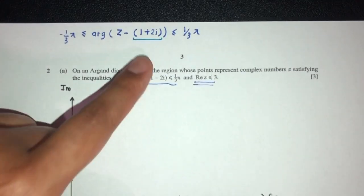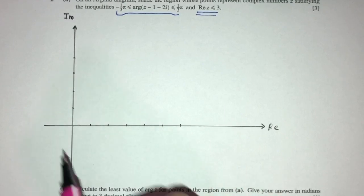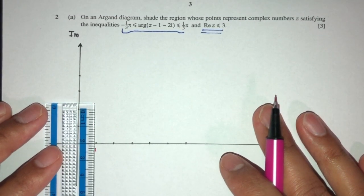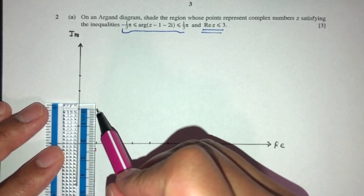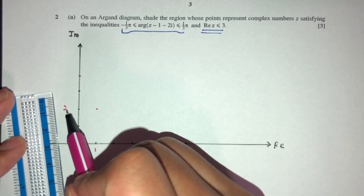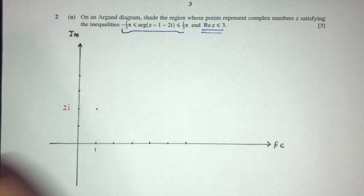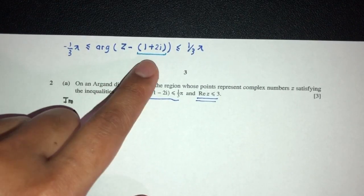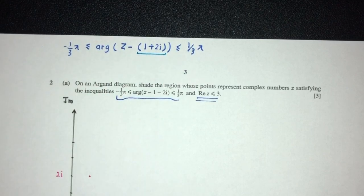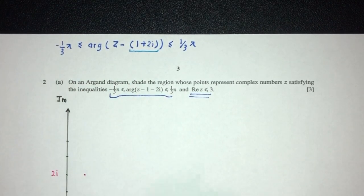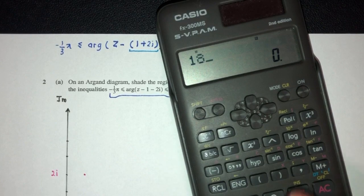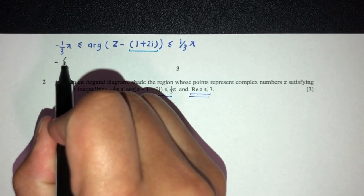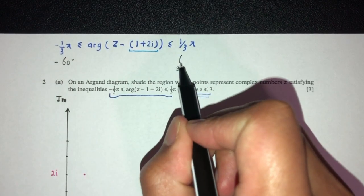For the first inequality, the point is 1 + 2i, so 1 on the real axis and 2i approximately here. From this point, we have argument between minus π/3 and π/3. Since π is 180, 180 divided by 3 is 60. So this is basically minus 60 degrees and plus 60 degrees.